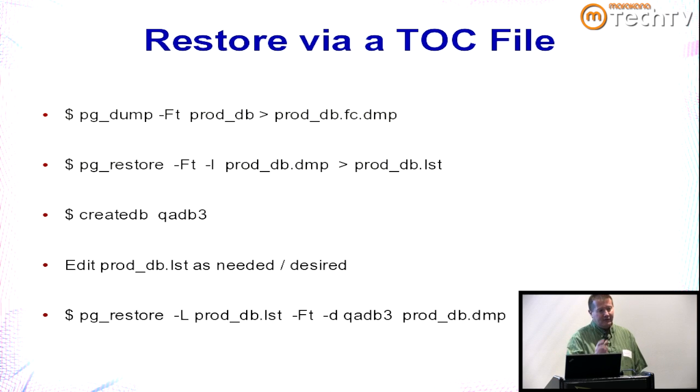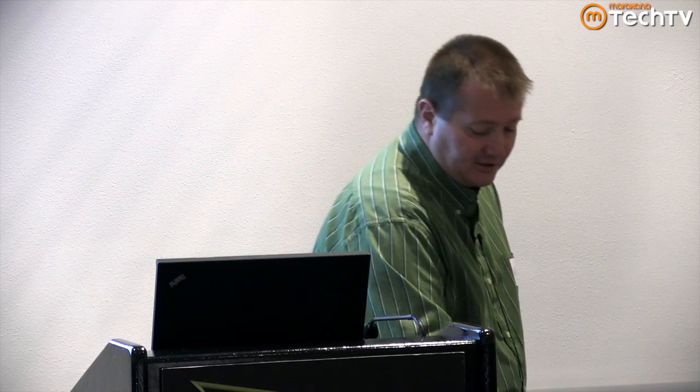It will restore only the data structures and objects referenced in the list file. A question was asked whether all these features are available in generic Postgres versus EDB's Advanced Server — the answer is yes, this is generic Postgres. Another question: the advantages of the custom file format are that it's compressed and it's binary, so it's a more efficient restore, plus the compression benefit.